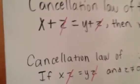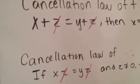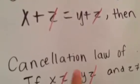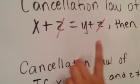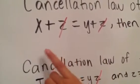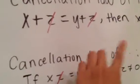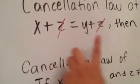Here it says x plus z equals y plus z, then x equals y. We can cancel the z's out because they're both on the same sides of x and y, so we can cancel those and we have x equals y left.